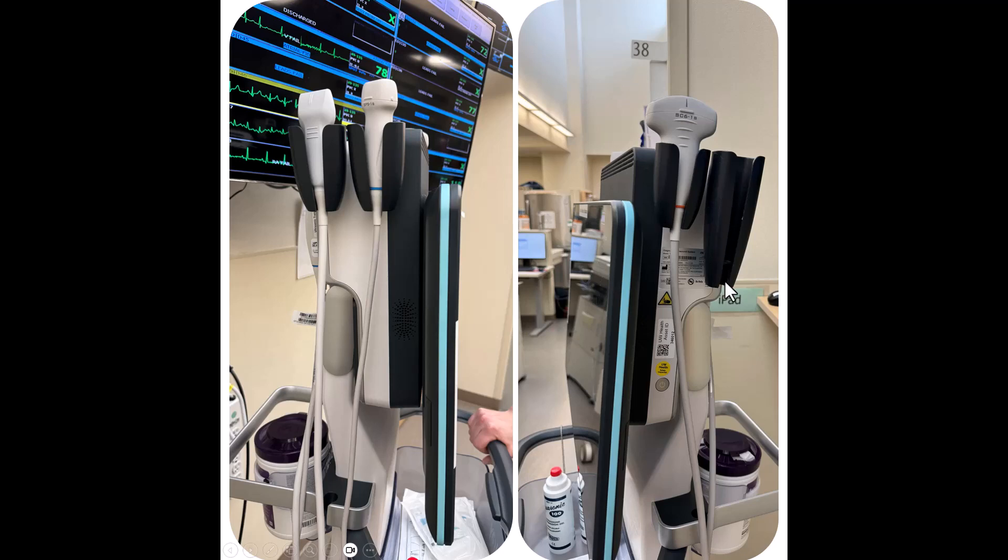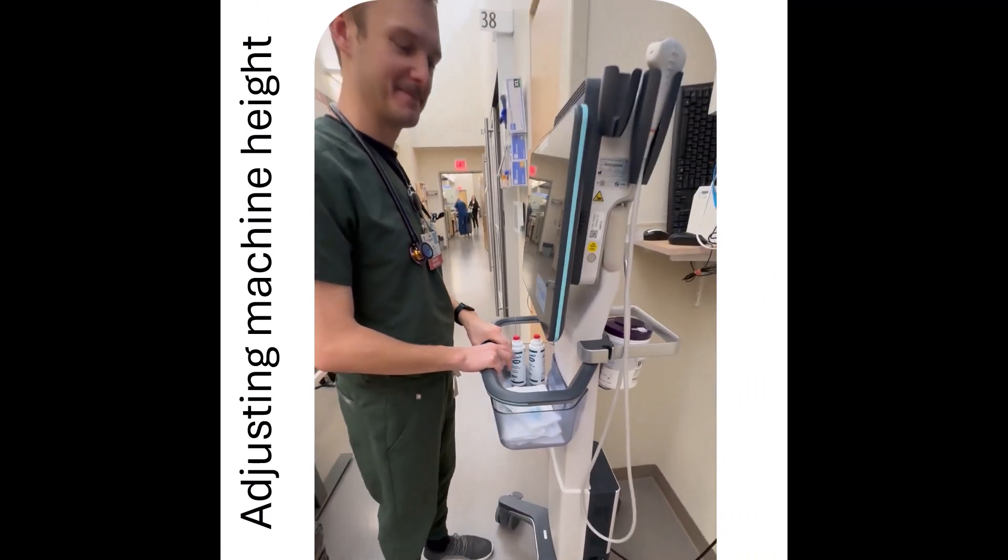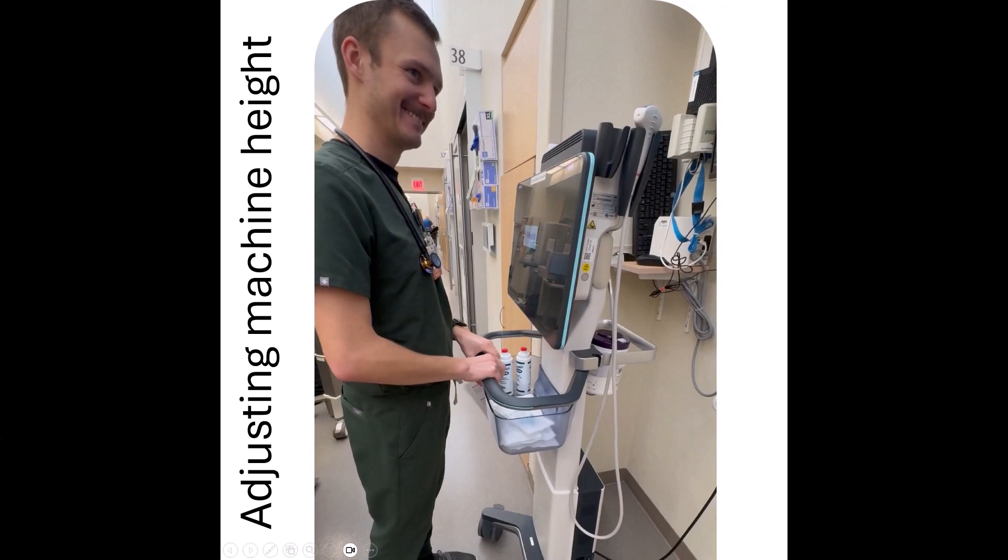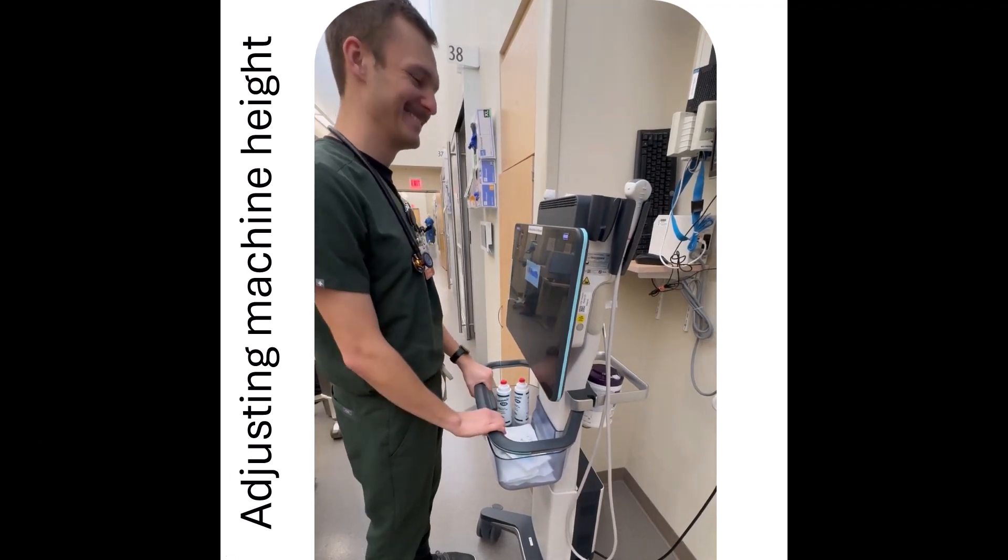You'll also see this one here is quite deeper. This is for the endocavitary probe. Next, we'll talk about adjusting the machine height. There's a small little click bar that you're going to press and hold here, and then raise or lower the machine at the height you wish to use it at.